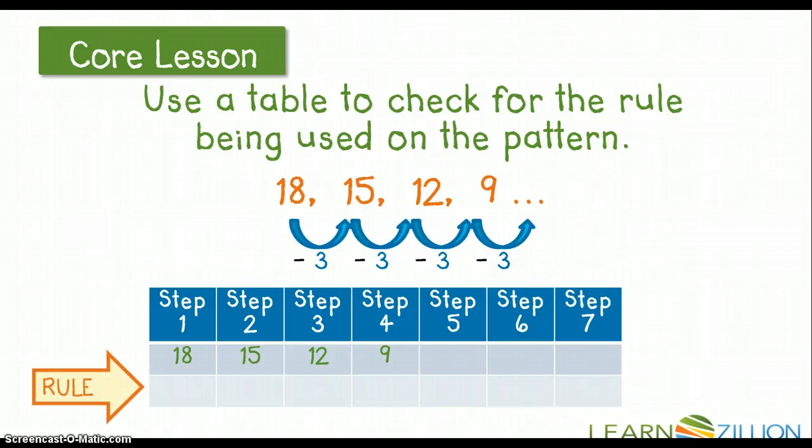So those are my steps, and then I'm going to plug in my rule. And I'm going to say 18 minus 3 is 15, 15 minus 3 is 12, 12 minus 3 is 9. And then I'm going to put minus 3 for steps 5, 6, and 7. So I know that 9 minus 3 is 6, 6 minus 3 is 3, and 3 minus 3 is 0.